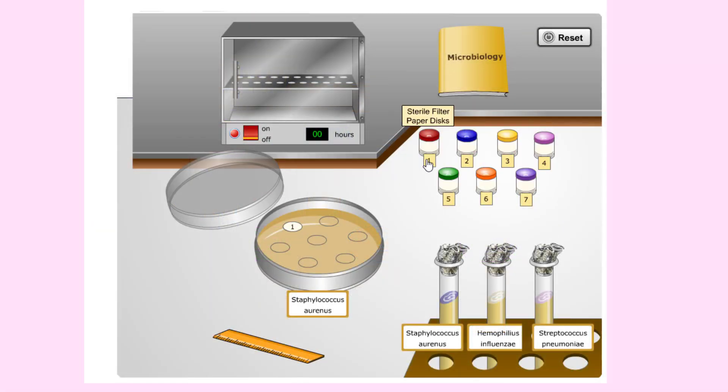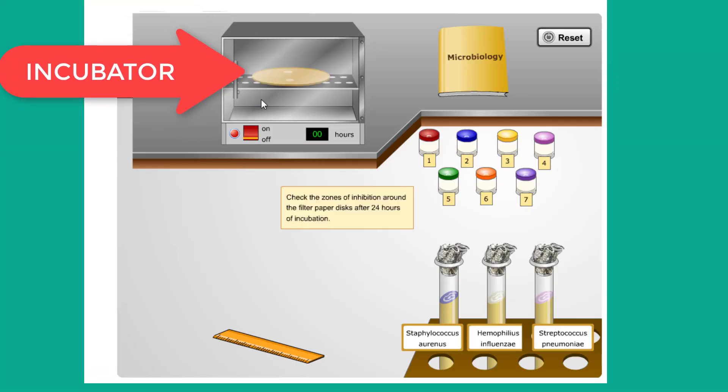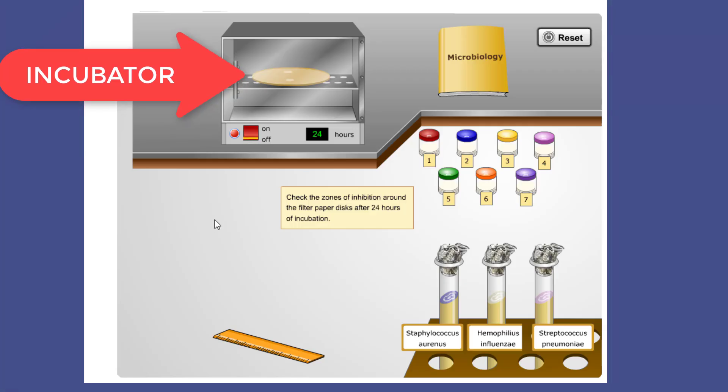After inoculating the agar in the petri dish, we will drag a disc from each of our vials and place it on the petri dish. In order to avoid contamination, these discs should not be moved after they have been dropped into the petri dish. Next, we click on the incubator to place the petri dish into it, and click the red button of the incubator to turn it on.